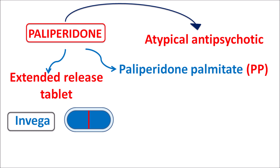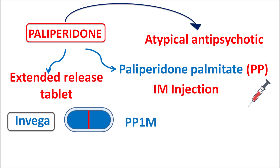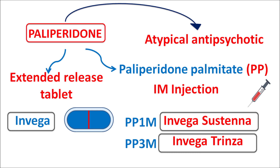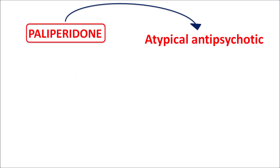This drug is also available as paliperidone palmitate, which is available for intramuscular injection. We have different preparations such as PP1M under the brand name Invega Sustenna, given every month, and PP3M under the brand name Invega Trinza, given every three months to control psychotic symptoms.